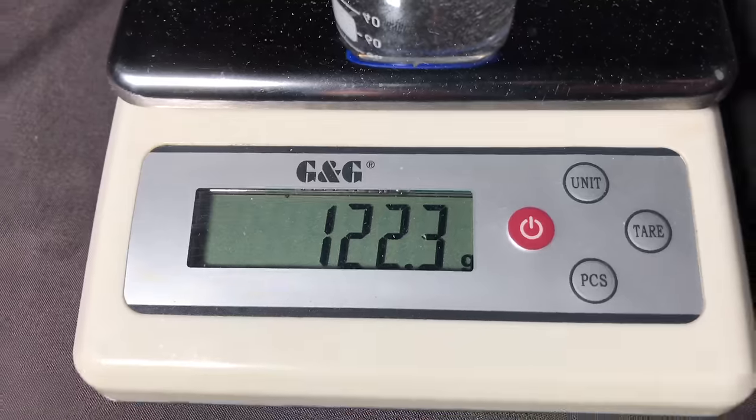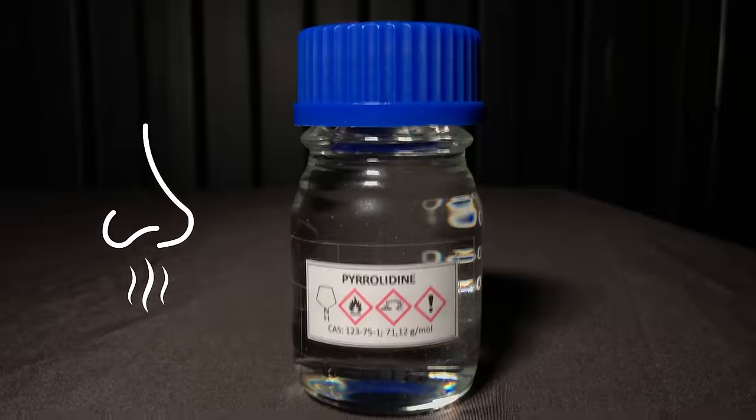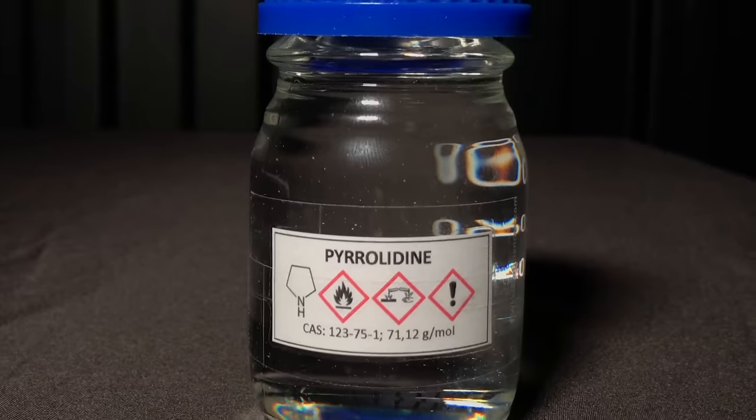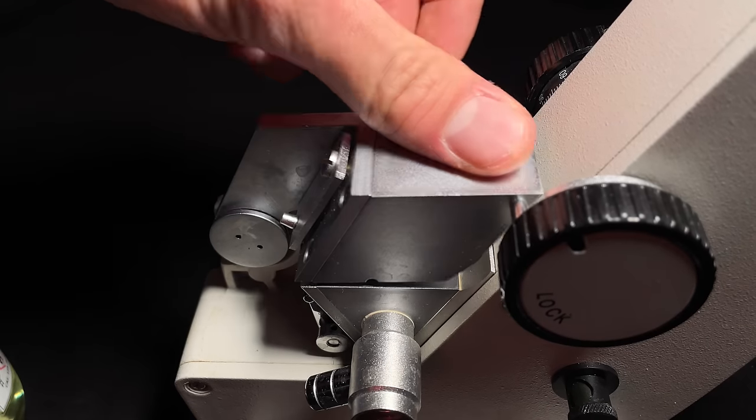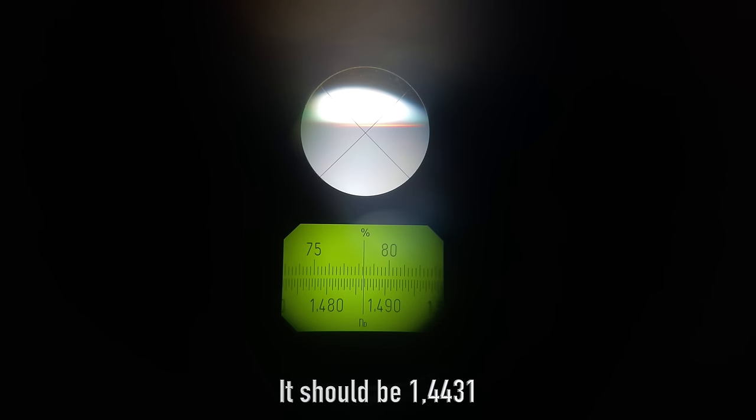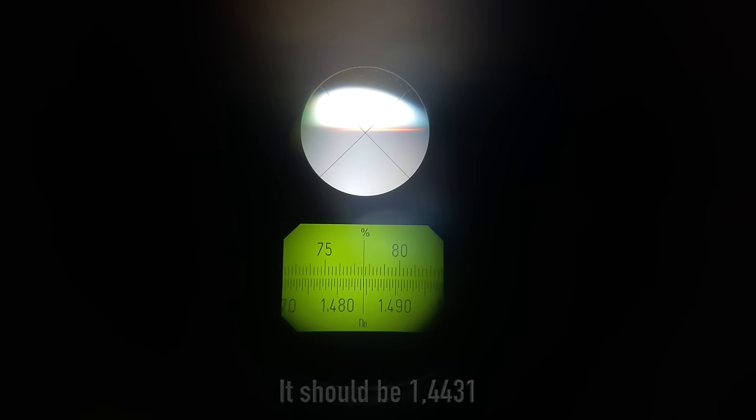Our first indicator of purity is that the boiling point matches the theoretical one. In the end, 122.3 grams of nasty were obtained. This represents an 85.3% yield. I measured the refractive index and it was way too high, which means that it's still impure. For our purposes however, this should be pure enough.